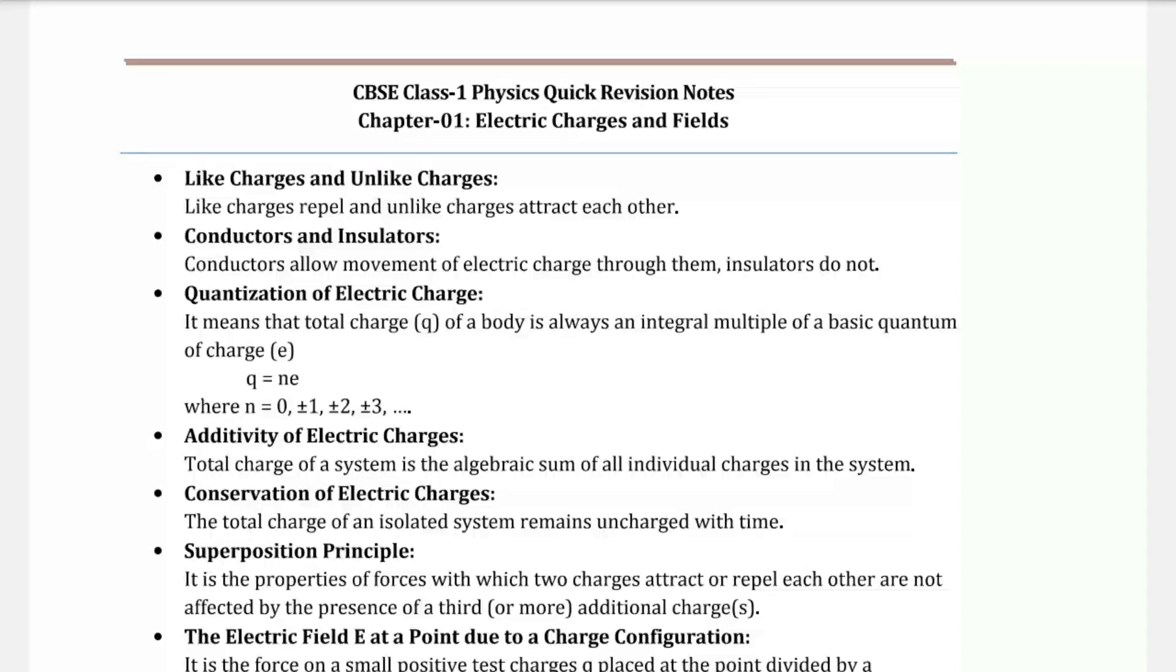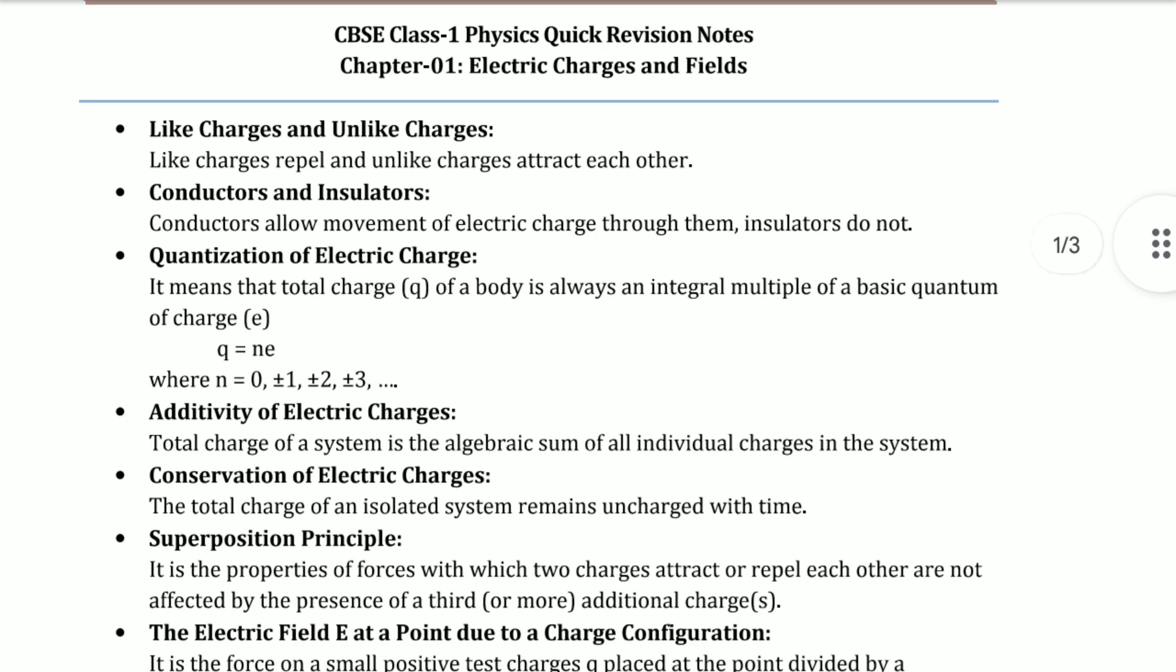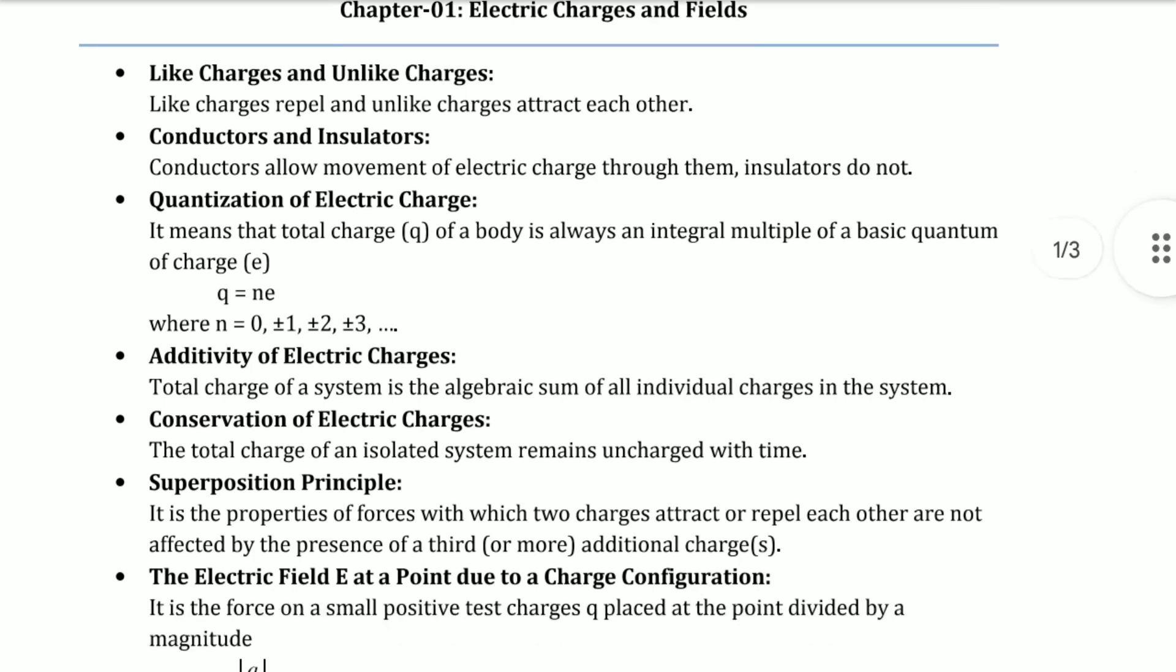Welcome! In this single video, we'll have a quick revision of Class 12th first chapter: Electrostatics. We know it's a huge chapter. First, like charges and unlike charges - like charges repel and unlike charges attract each other. Conductors allow movement of electric charge through them, and insulators do not.